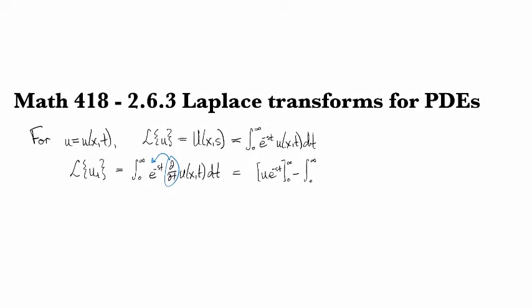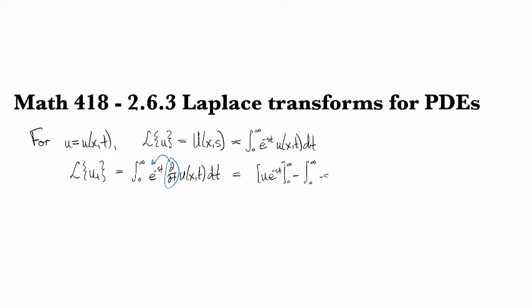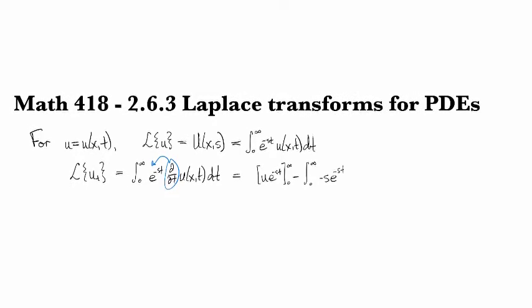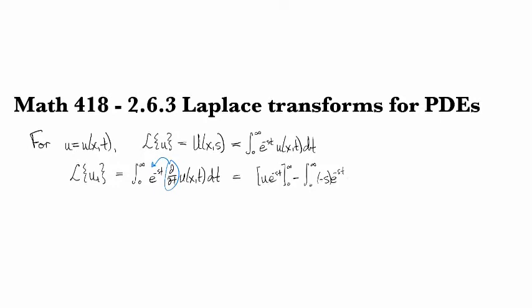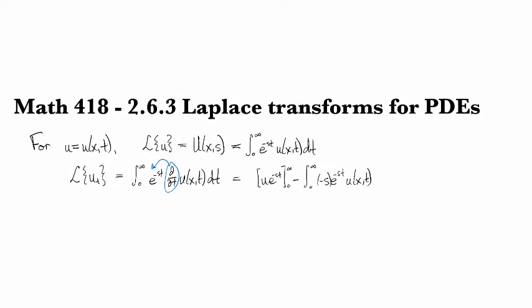And so then the derivative of e to the minus st is negative s e to the minus st, and now we've got the derivative off the u.